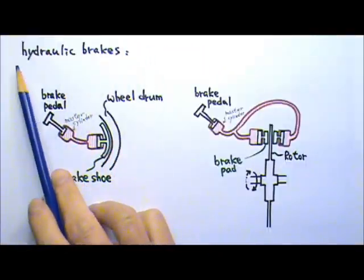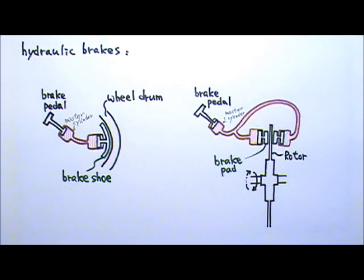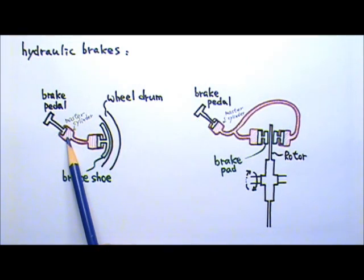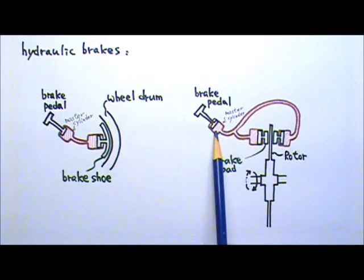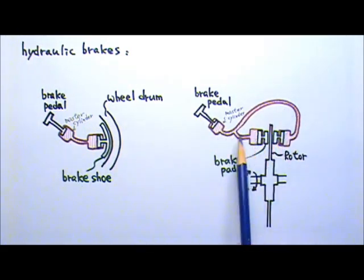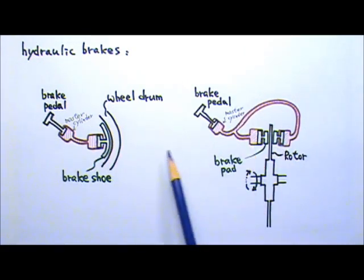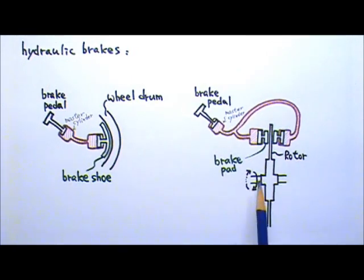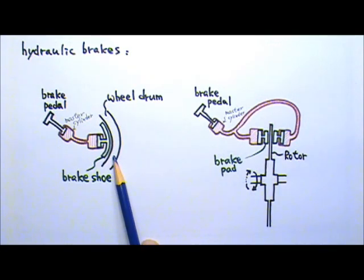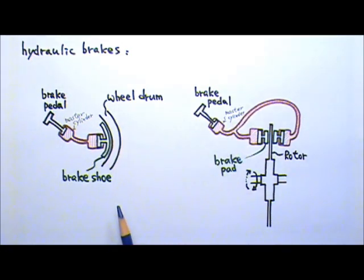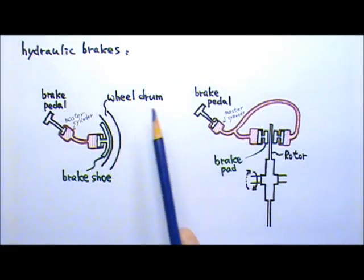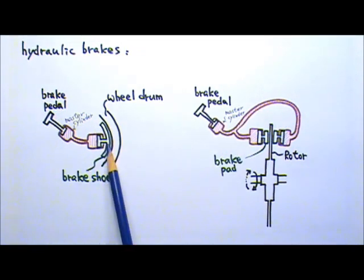The hydraulic brake system used in cars is similar to hydraulic lifts — it helps us save force. When you step on the brake pedal, you add extra pressure to the brake fluid inside the master cylinder, which is transmitted throughout the entire confined fluid to the brake pads or brake shoes of each wheel. The brake pads or brake shoes then apply friction to the wheel rotors or wheel drums to slow down your car. Another great advantage of hydraulic brakes is the flexible brake fluid lines, which make it easy to route around parts of the car to reach all wheels.